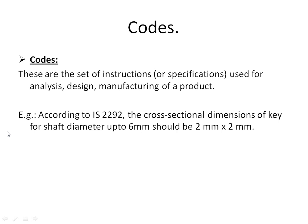Another example is the cross-sectional dimension of a key for various sizes of shaft, decided by IS 2292. For a shaft up to diameter 6 mm, the cross-sectional dimension of the key should be 2 by 2 mm. This is about codes.